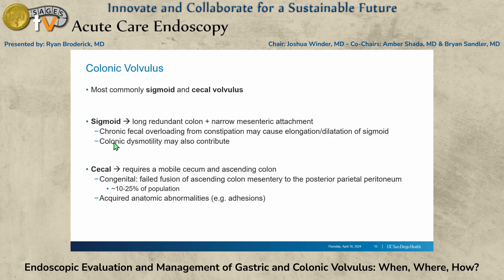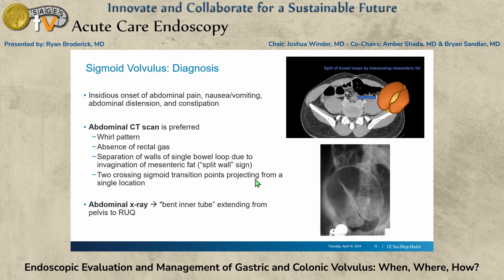Moving on to colonic volvulus. We'll talk sigmoid and cecal. Sigmoid is really where endoscopy is going to play a role — long redundant colon with chronic fecal overloading and dysmotility may also contribute. Cecal volvulus is less likely to be managed endoscopically; it's more a surgical problem. For sigmoid volvulus, you can get a whirl pattern and absence of rectal gas, and a split wall sign on CT scan. On abdominal x-rays, you see the classic bent inner tube sign.